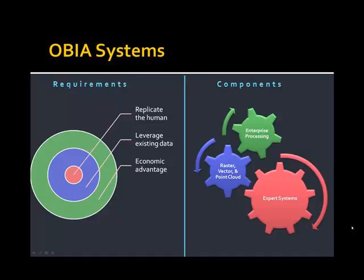In order to do this type of analysis, we really need a system. I'd like to talk about object-based image analysis systems from both a requirements perspective and a components perspective. We see the requirements as being: firstly, to replicate the human; we need highly accurate, high-quality land cover data. We want to leverage existing data rather than spend hundreds of thousands of dollars on new data acquisition. And finally, we need to provide an economic advantage — specifically, being much more cost effective than traditional methods such as manual image interpretation.